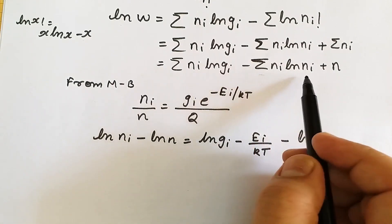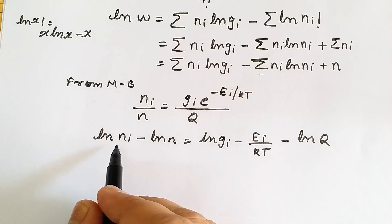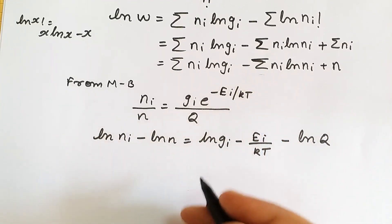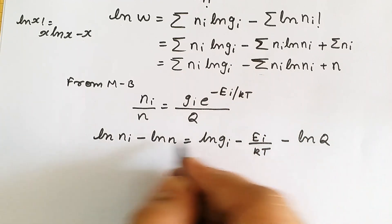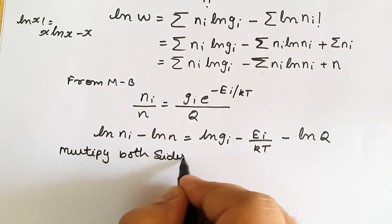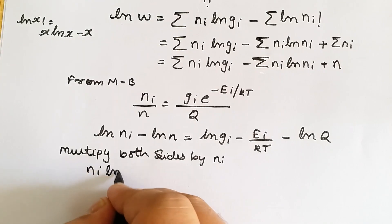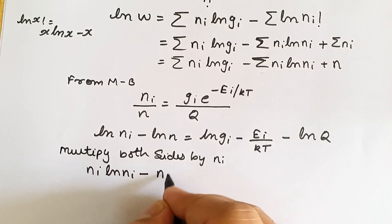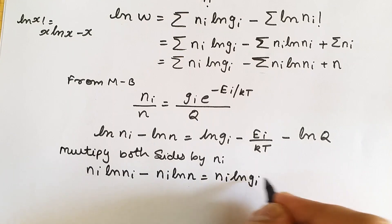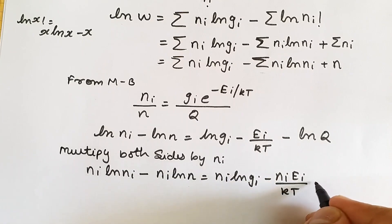We are trying to get the term summation of Ni·ln(Ni) in a useful form. To do this, we multiply both sides by Ni. When we multiply both sides by Ni, we get: Ni·ln(Ni) minus Ni·ln(N) equals Ni·ln(gi) minus Ni·Ei upon kT minus Ni·ln(Q).